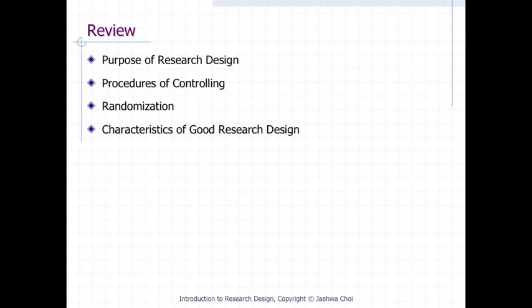In the previous lecture, we first learned the purpose of research design, which is controlling spurious effects from research conclusions. Second, we learned four options and procedures of controlling.